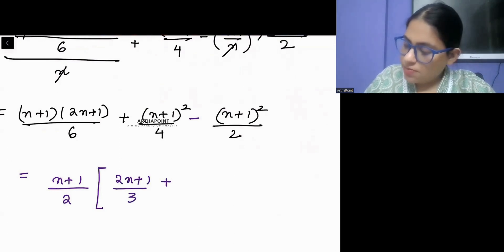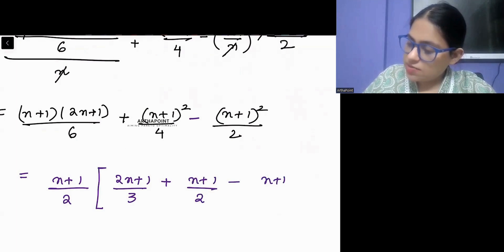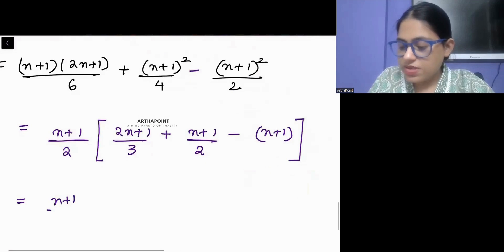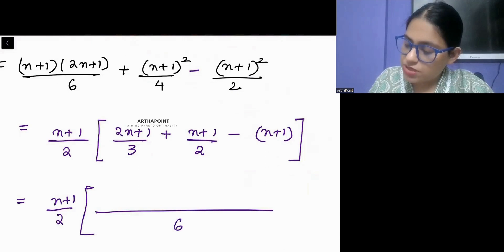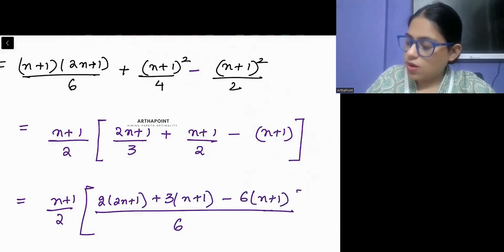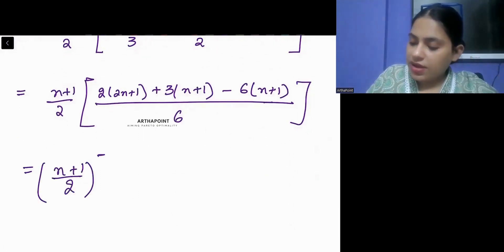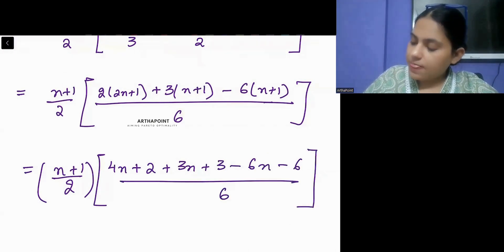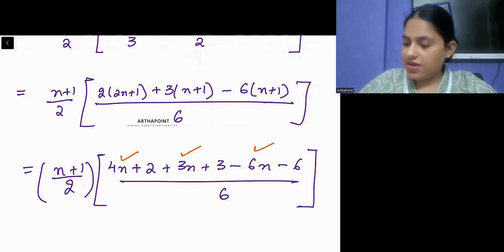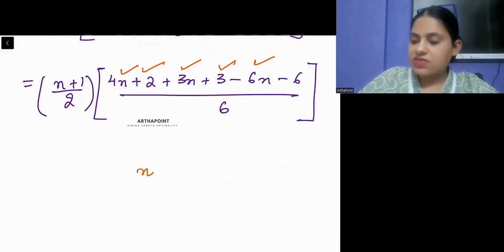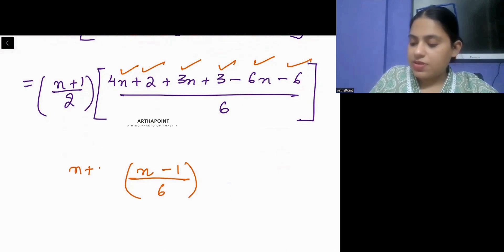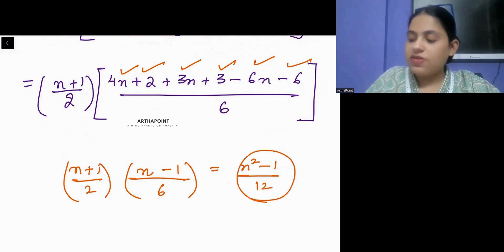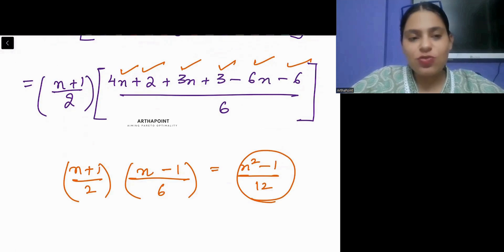Taking (n+1)/2 as a common factor and using LCM of 6, we get: (n+1)/2 times [2(2n+1) + 3(n+1) minus 6(n+1)] divided by 6. Simplifying: 4n + 2 + 3n + 3 minus 6n minus 6 gives n minus 1. So variance equals (n+1)(n-1)/12, which is (n²-1)/12. This is the standard formula for the variance of first n natural numbers.